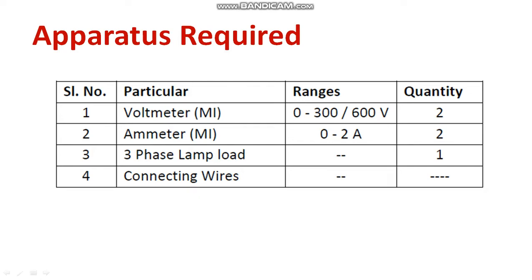The following apparatus are required. All meters are moving iron only because it's an AC supply. For the voltmeter we need two quantities in the range of 0 to 300 and 600 volt. Then ammeter also 0 to 2 ampere — two quantities are needed. We are going to use the lamp load, and you also need to ensure the wires have better continuity.